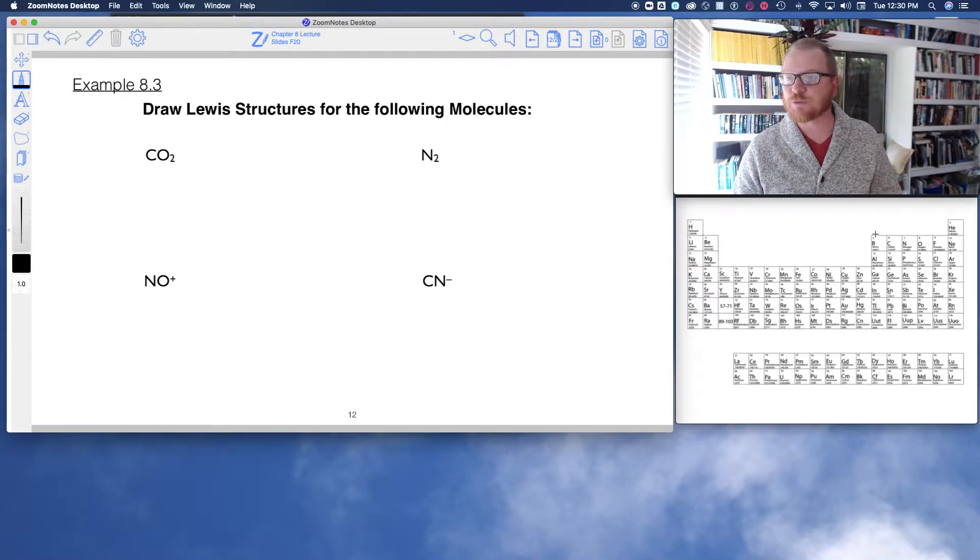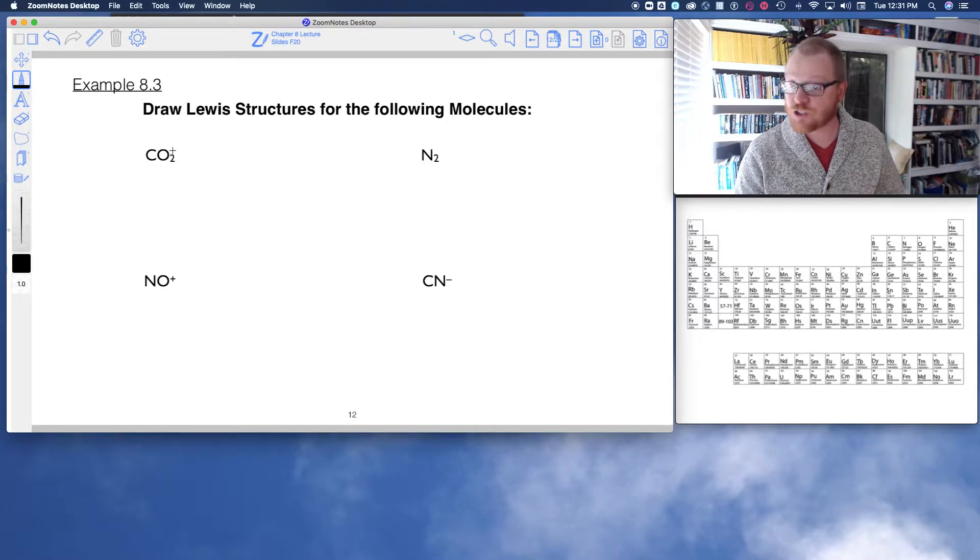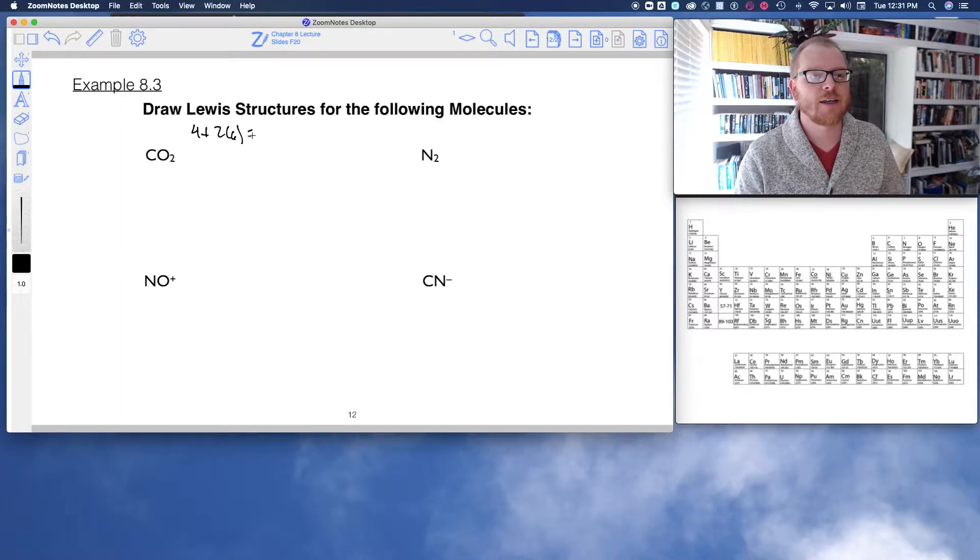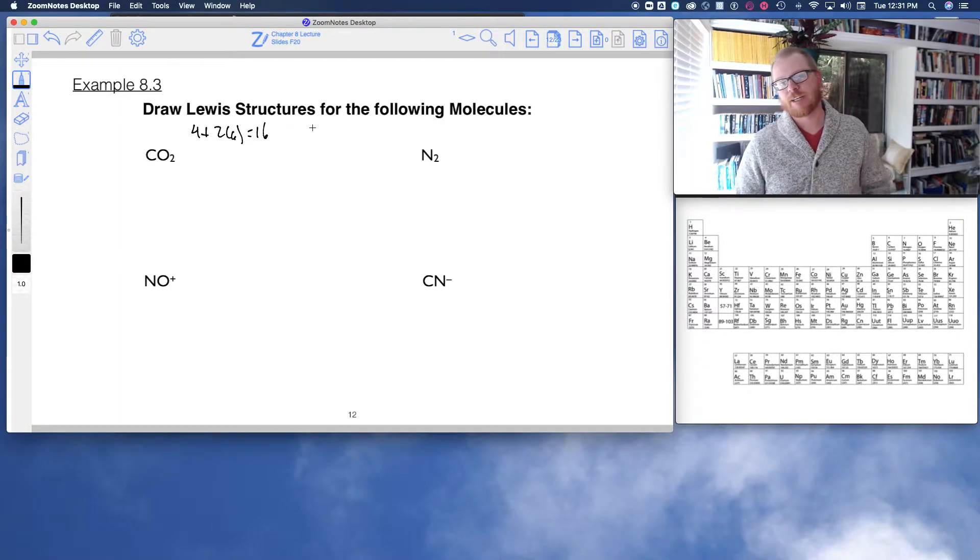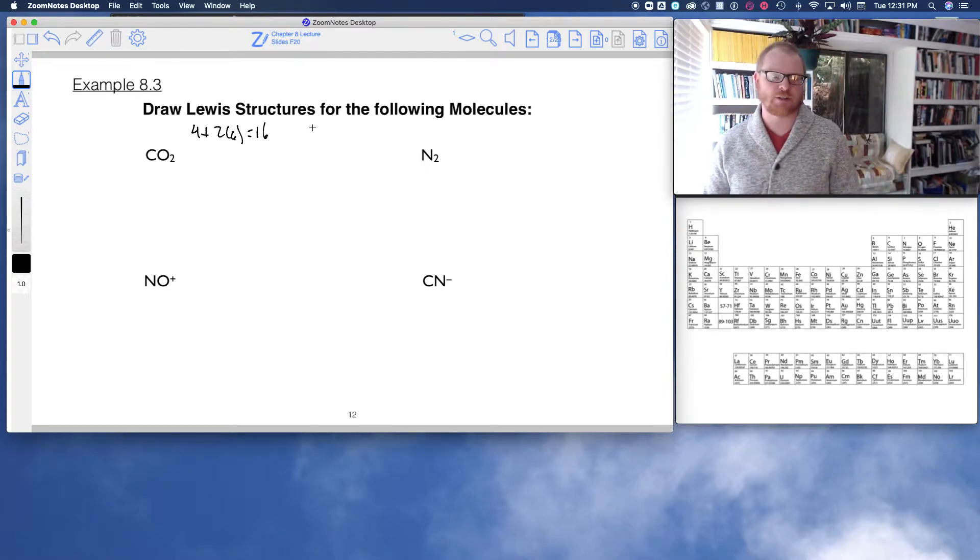So let's first do CO2 together. Carbon has four valence electrons: one, two, three, four. Oxygen has six: one, two, three, four, five, six, and there's two of them. So four plus two times six gives me 16. That's the first thing I need to do is count up the total number of valence electrons.